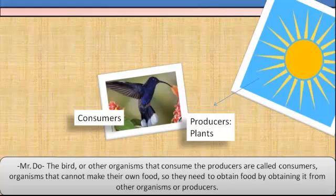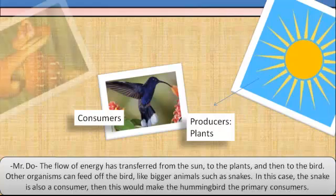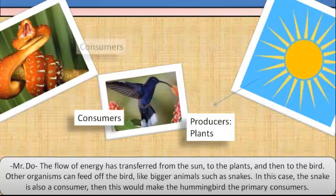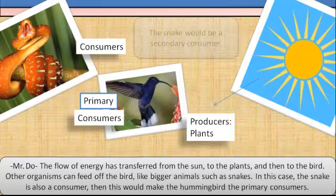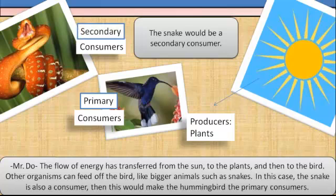The flow of energy has transferred from the sun to the plants and then to the bird. Other organisms can feed off the bird, like bigger animals such as snakes. In this case, the snake is also a consumer. This would make the hummingbird the primary consumer, and the snake would be a secondary consumer.